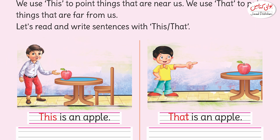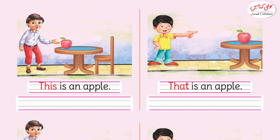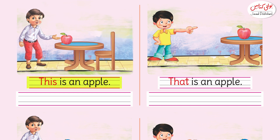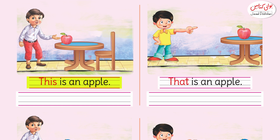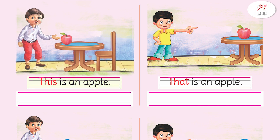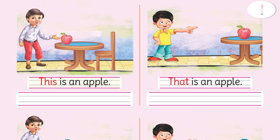Dear children, look at the first picture and tell me — is the apple close to the girl? Yes, the apple is close to the girl, which means the apple is near. So we will use 'this' in this sentence: 'This is an apple.' Good. Now you have to copy this sentence and write it in the space.